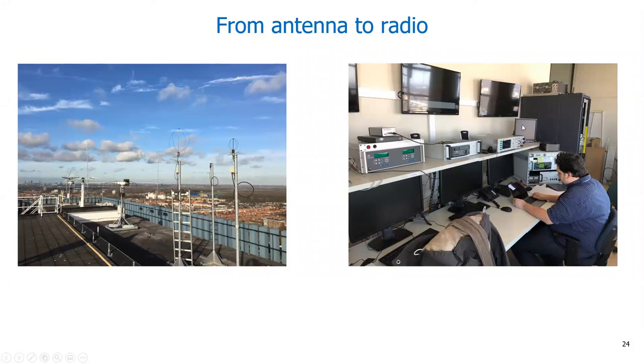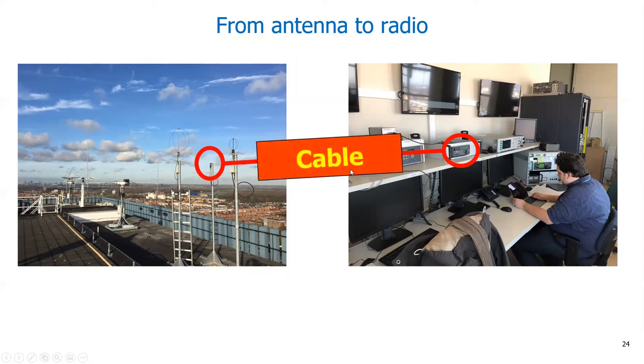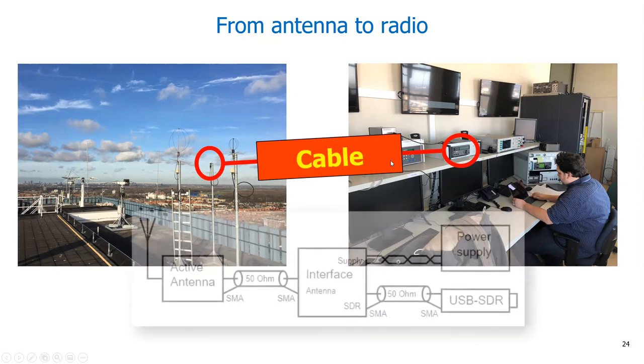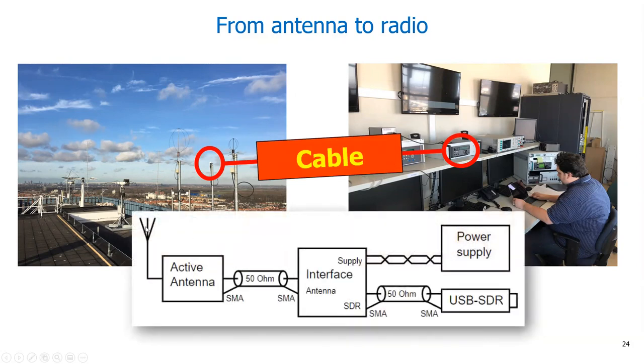Now we want to go from this antenna to the receiver with a cable. This means the whole system we will be looking at in this course is this chain: we have an active antenna, a 50 ohm cable, an interface, and then we go to the software defined radio.